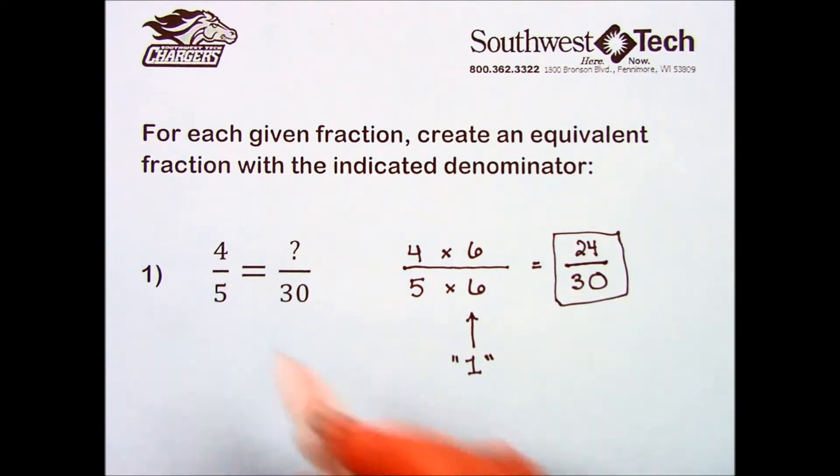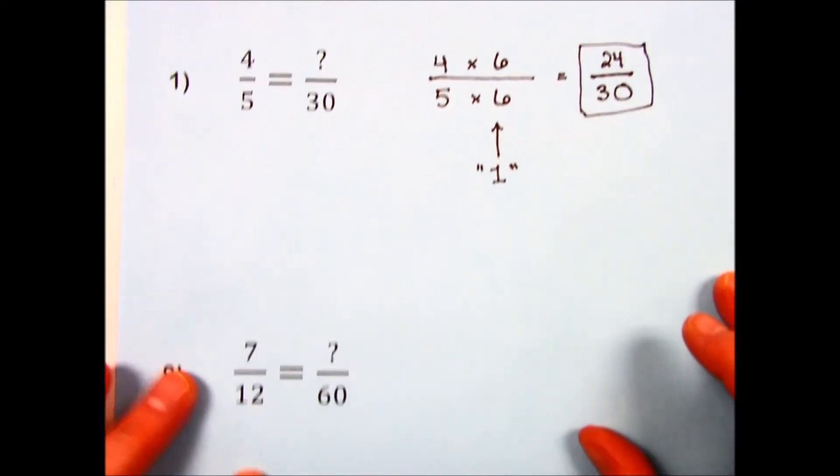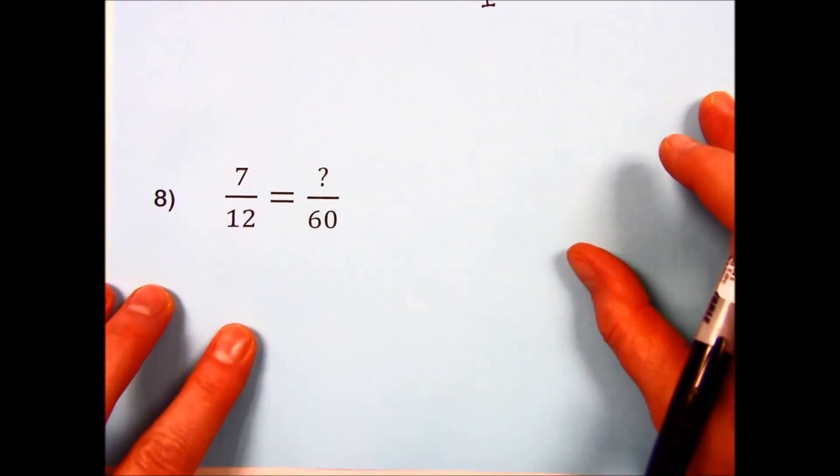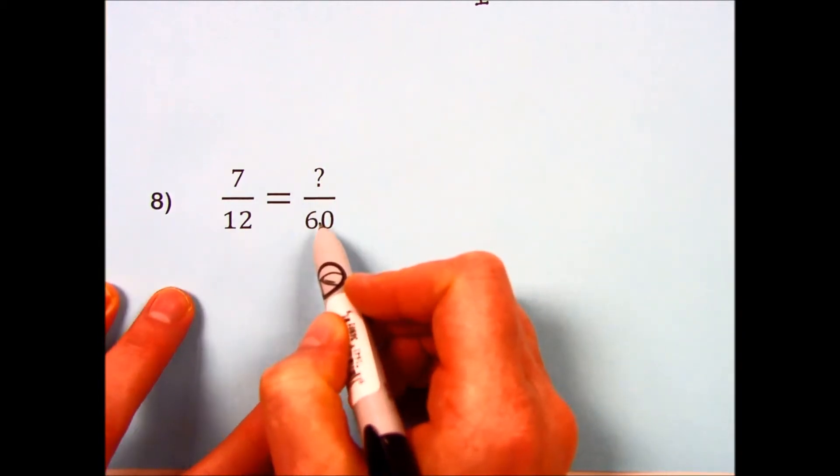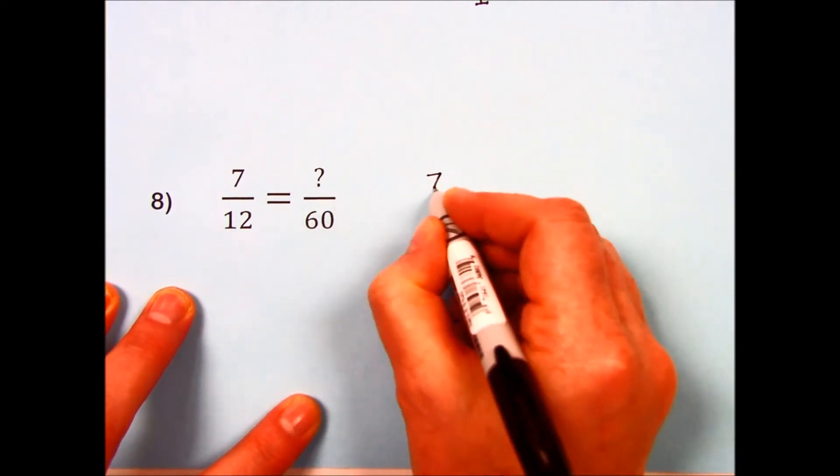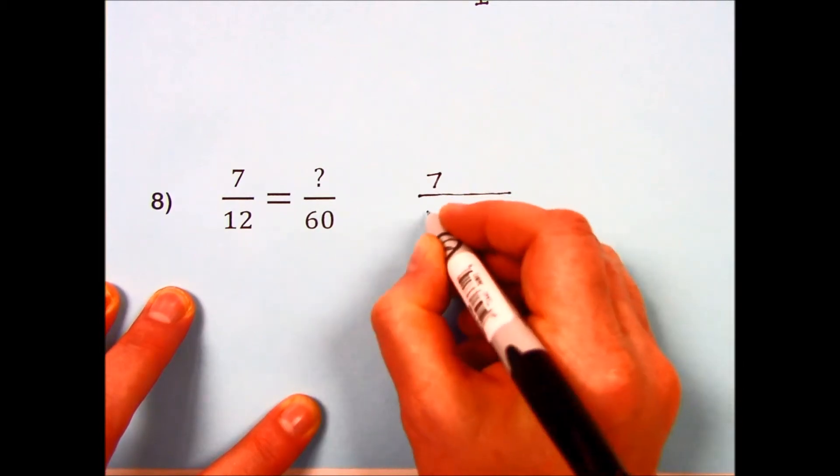Let's try one more together. Number 8. 7 twelfths is equivalent to how many sixtieths? I write my 7 twelfths down with extra space.